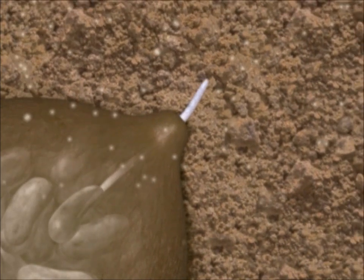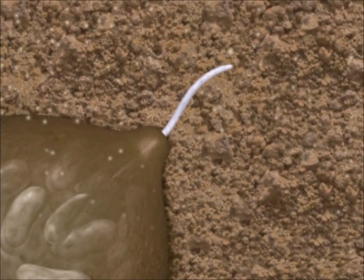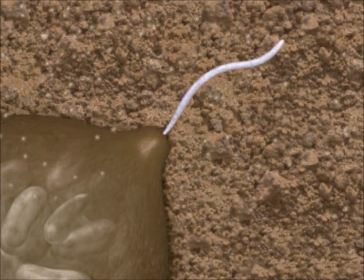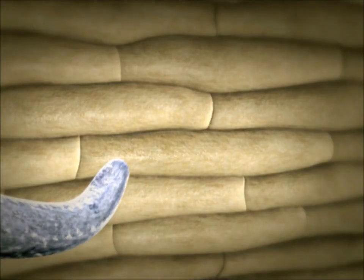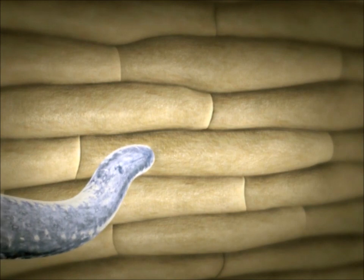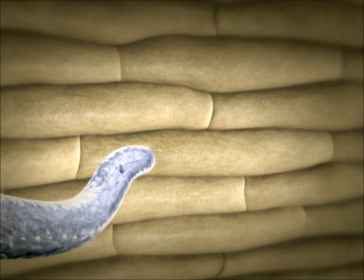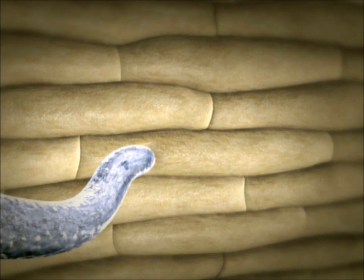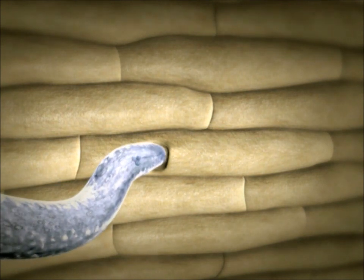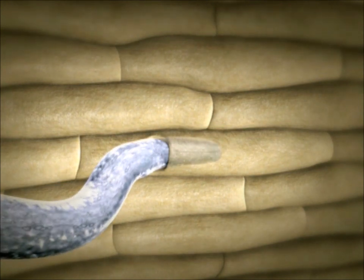As soon as an infectious juvenile has reached a sugar beet root, it uses its stylet to penetrate into one of the cells of the outer root layer. The roots of sugar beets are suitable hosts for this nematode species.